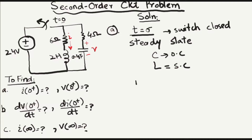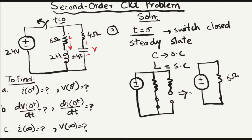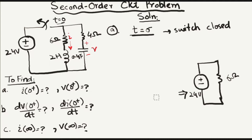We will replace the capacitor with an open circuit and the inductor with a short circuit, then redraw the circuit. There is a short circuit for the inductor, and the capacitor is an open circuit. Simplifying, the resistor and capacitor branch is excluded because there will be no current going through it. This gives us the final simplified circuit.